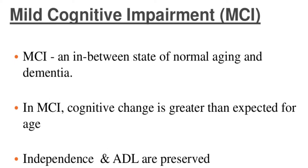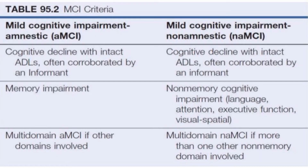Mild cognitive impairment is in between normal ageing and dementia. In mild cognitive impairment, cognitive change is greater than expected for age, and independence in ADL is preserved. This is the difference between mild cognitive impairment with amnestic and mild cognitive impairment with non-amnestic types. Cognitive decline with intact ADLs is often corroborated by an informant, and memory impairment in multi-domain MCI occurs if other domains are involved.